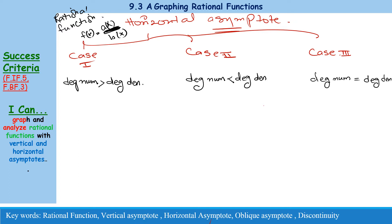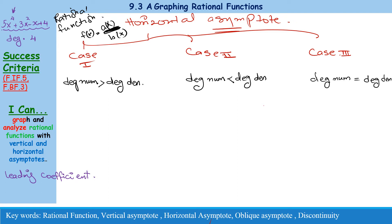Let's understand what is meant by degree. If I have an equation like x to the power 5, x to the power 4, plus 3x cubed minus x plus 4, the highest power is 4, so that is the degree. There is also a term called leading coefficient — it is the coefficient written with the highest degree term. In this case, the leading coefficient is 5.